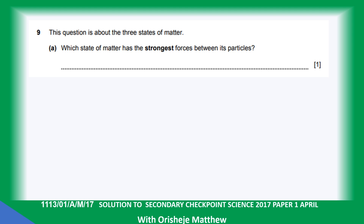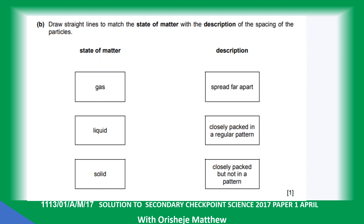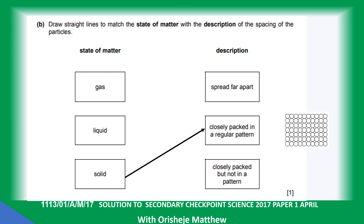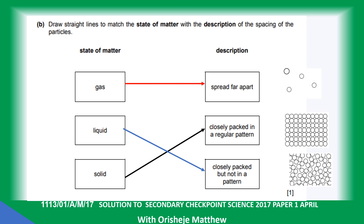Question nine is about the three states of matter. The state of matter with the strongest force between its particles is the solid state. Matching states to particle spacing: solid state — closely packed; liquid state — closely packed but not in a fixed pattern; gas — particles spread far apart.